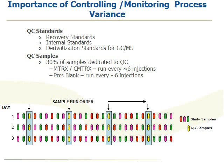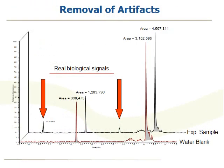The other sample we run is a process blank — an aliquot of water run through the entire process extraction and analysis. This allows us to tease out the molecules that are not a result of the biological samples but are solely a result of the process. For example, what we have here is a selected ion chromatogram for a human plasma experimental sample and the corresponding process blank. You can see that the two major signals in your experimental sample are actually from the process itself and have nothing to do with the biological sample — the only real biological signals are the two peaks close to the baseline. We use this information to remove these process signals before the data goes to stats, reducing the opportunity for false discovery.